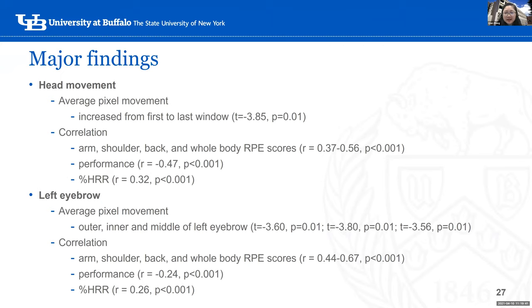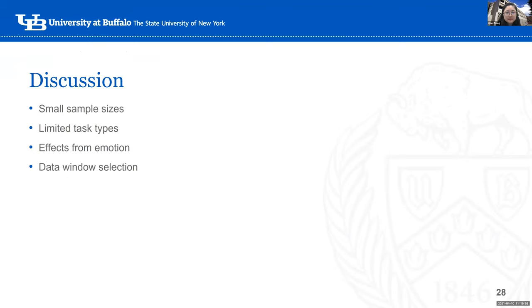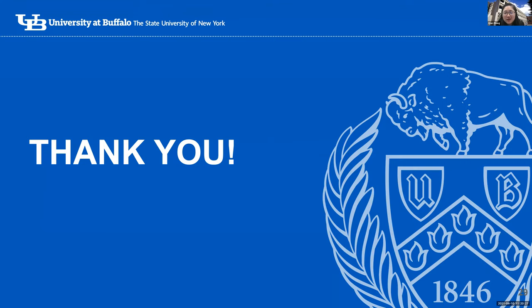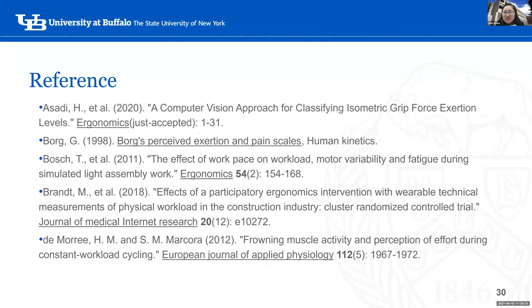Major finding: head movement and left eyebrow are potentially reliable indicators for physical workload, showing the largest movement at the very end of the test and high correlation with other physiological measures related to physical workload. Shortcomings include the small sample size needing to be increased, more types of tests needed, and the data window selection — rather than the middle 40 seconds, using 10 seconds before they report exertion would be more representative of their physical status. Thank you for letting me share this recent study.